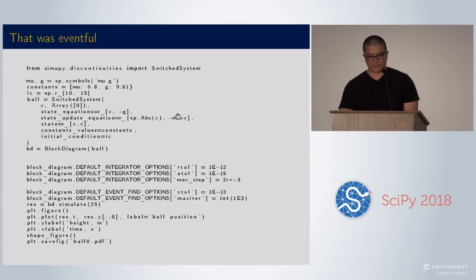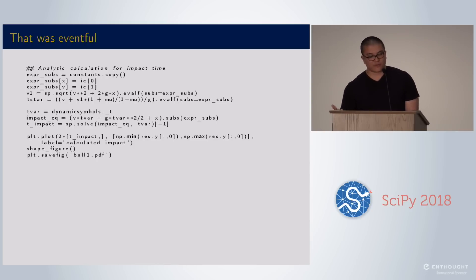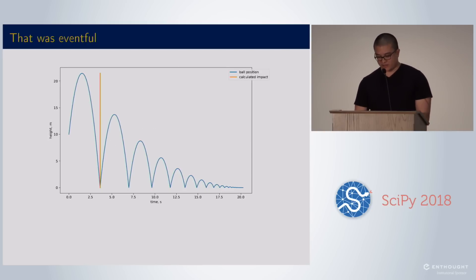Then I have a bounce multiplier, mu, which flips the sign and reduces, takes some of the energy out. It is a harder problem. So I did have to change some of the integrator options. But I can simulate it. And that's the previous figure I showed. You can also get an analytic calculation for when the impact should occur and it's right on the dot, which is great.